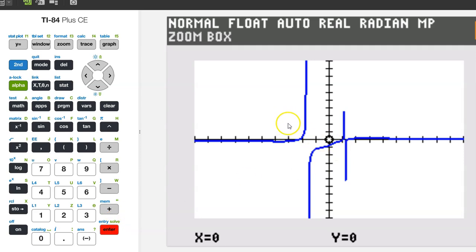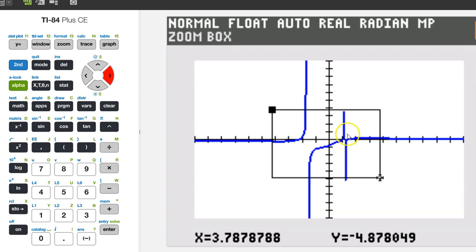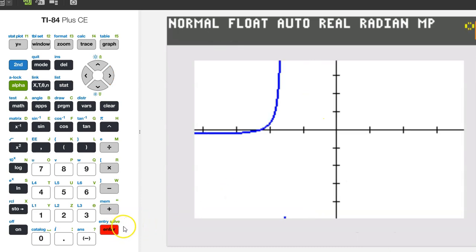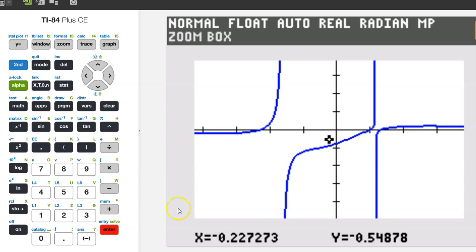Move your pointer to the upper left-hand corner of your area of interest. So I'm going to move it to about here. And hit enter. Now move your pointer to the lower right-hand corner of your area of interest. You'll notice that as I move it is drawing a rectangle. And when I hit enter it will zoom in on whatever is inside the rectangle.